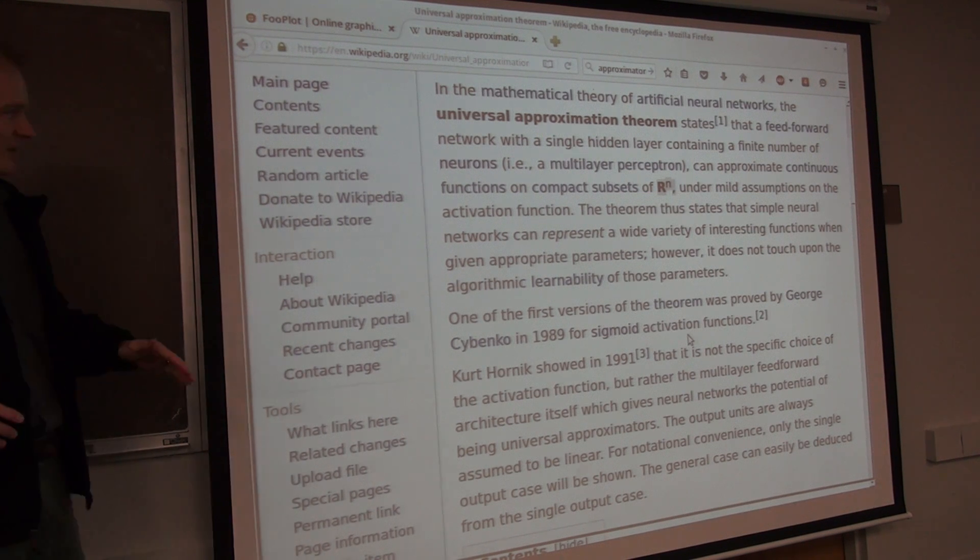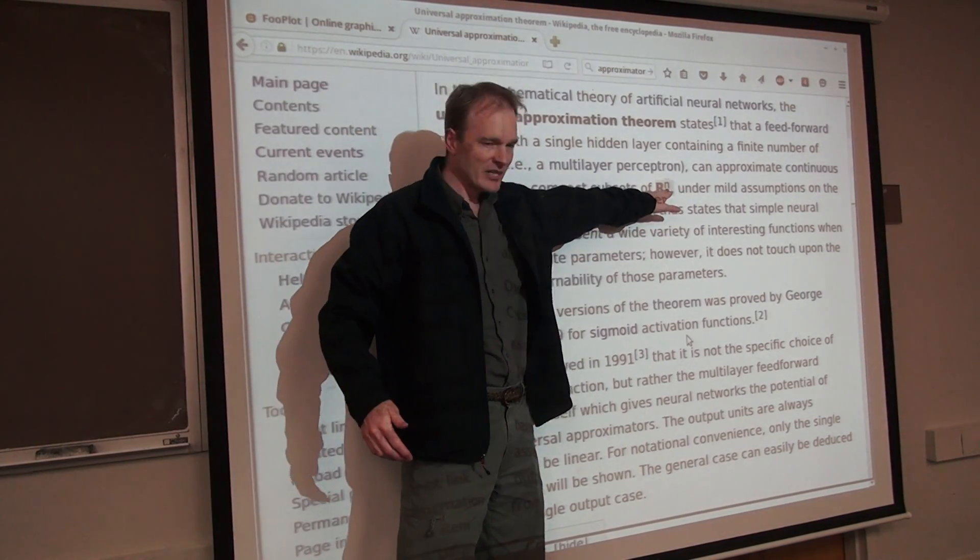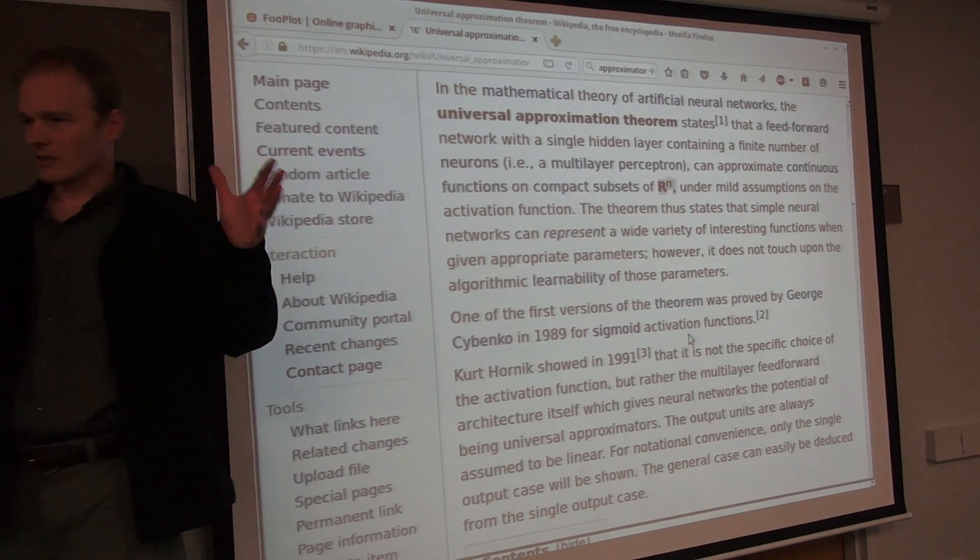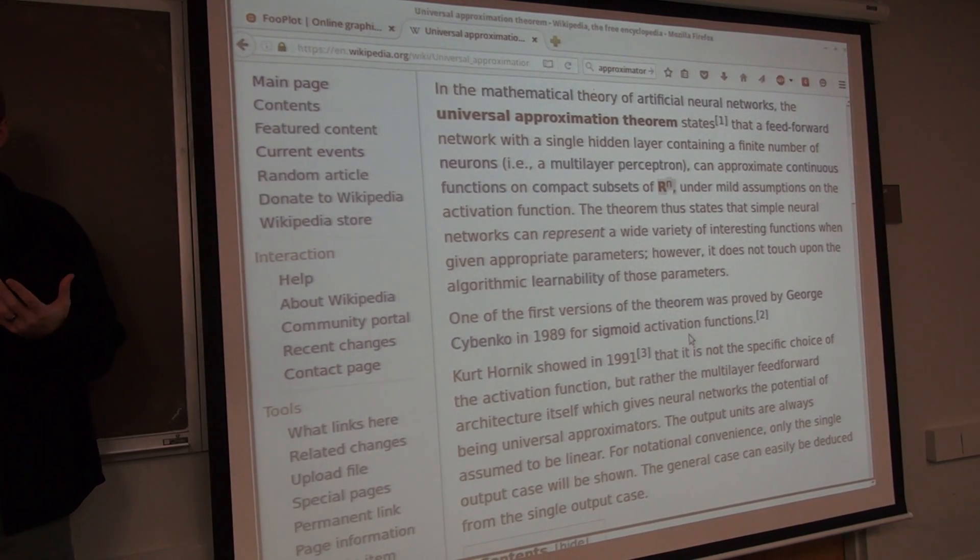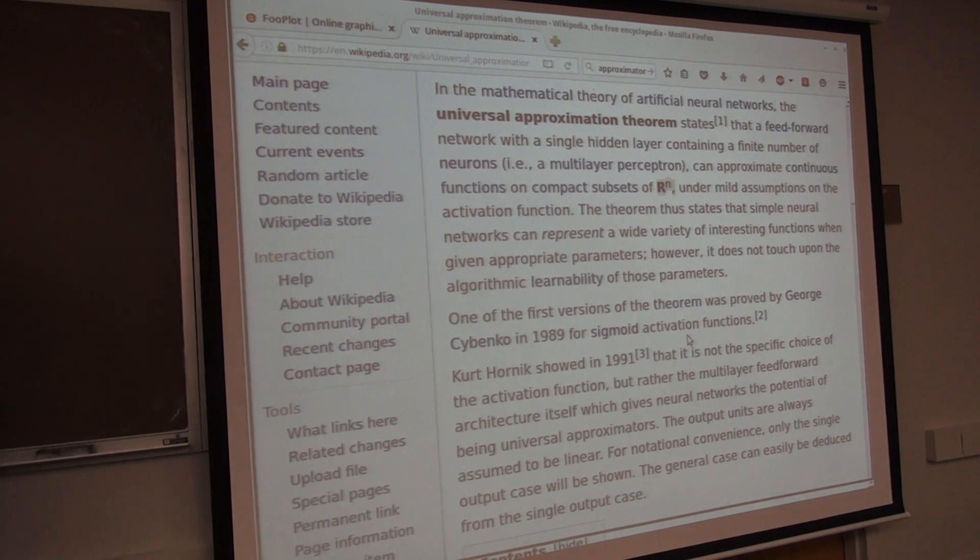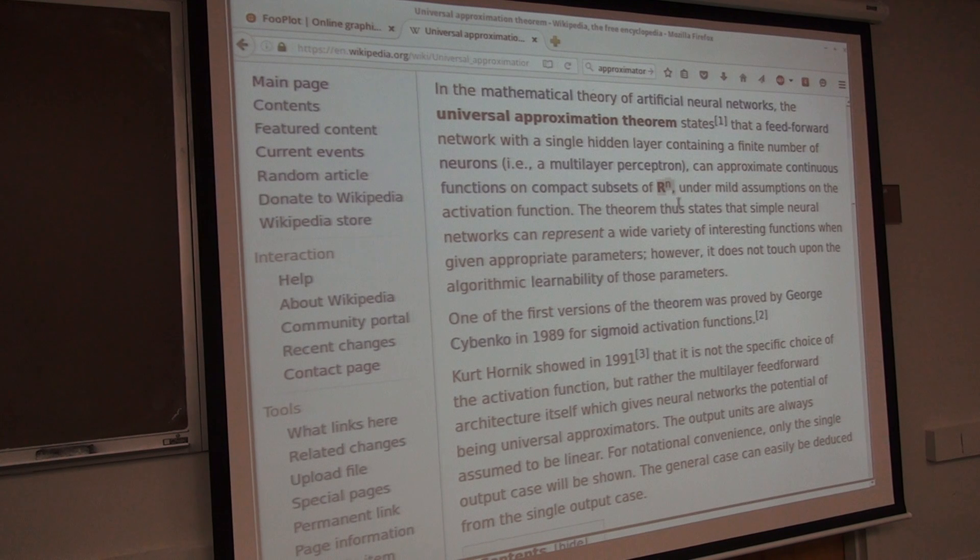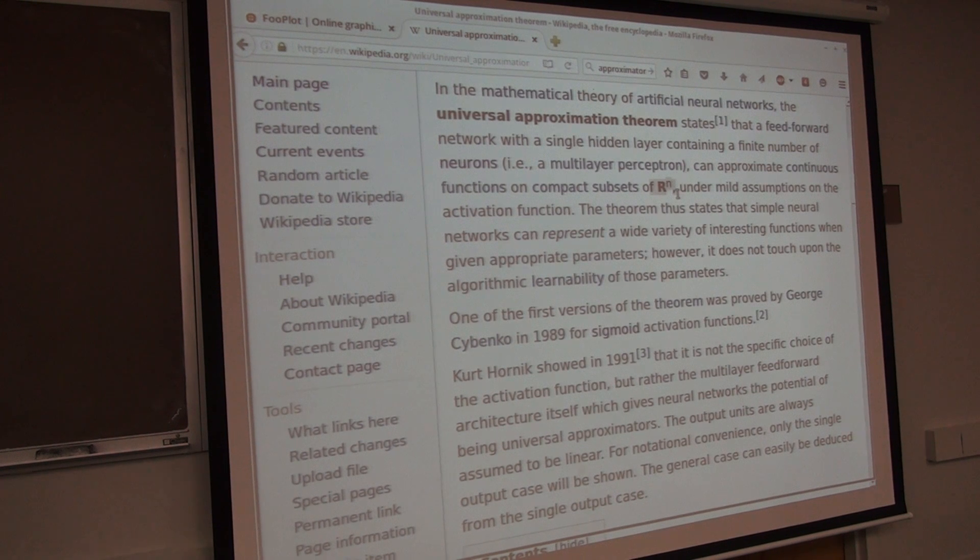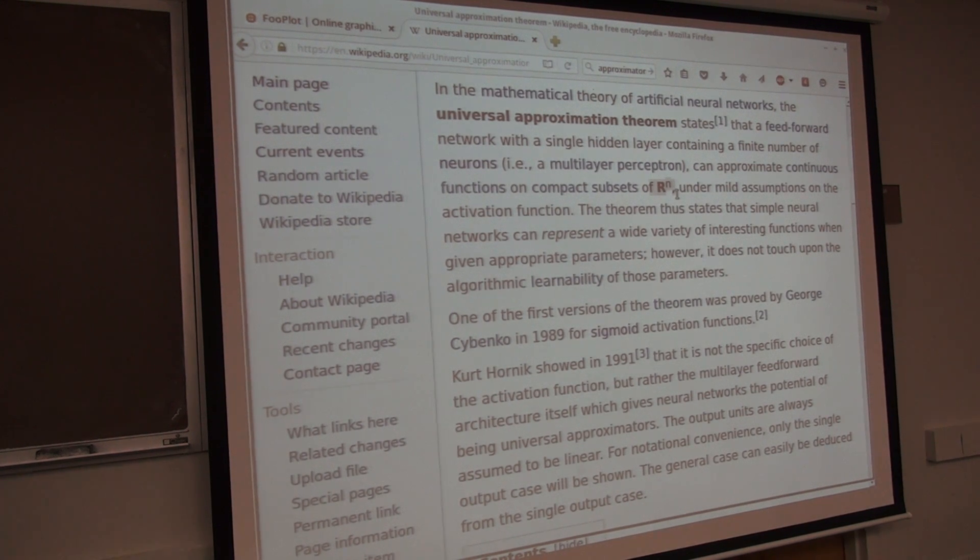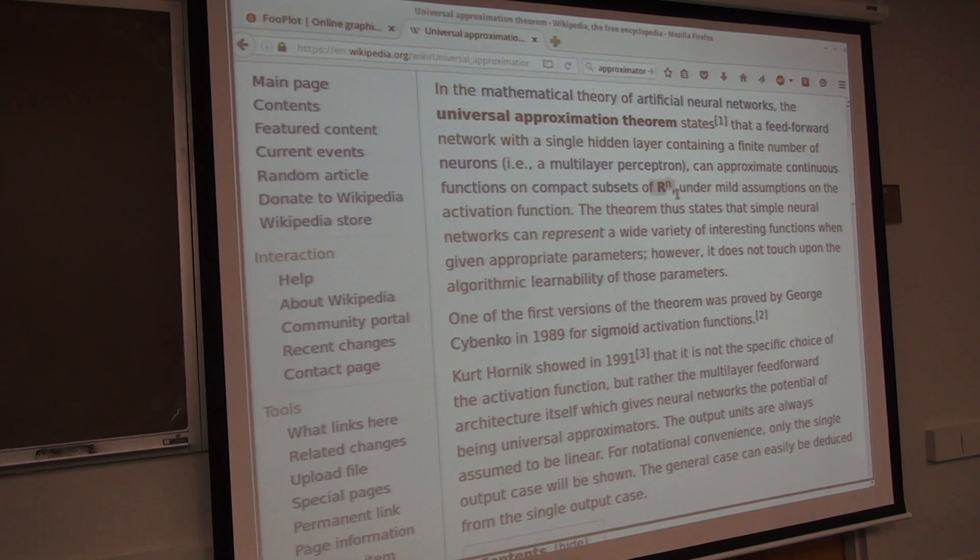So in mathematical notation, when you see R to the n, that implies an n-dimensional Cartesian coordinate system of continuous values. We're saying that any function in R to the n, which basically means anything, any number of dimensions, any size space, as long as it's continuous and follows the normal mathematical rules we're used to. Cartesian, Euclidean type distance here.